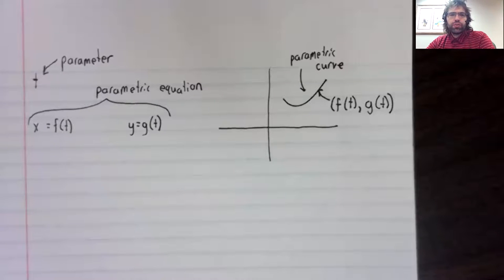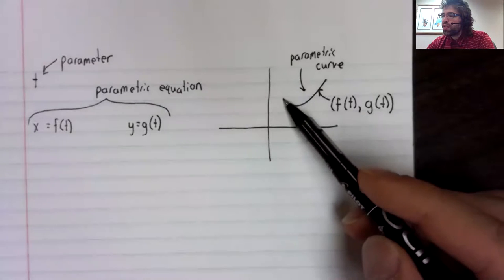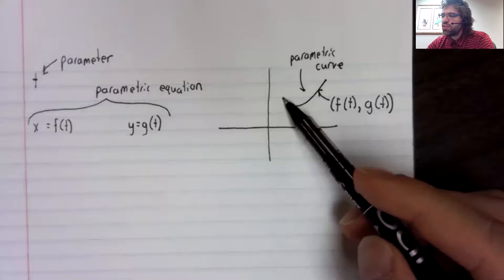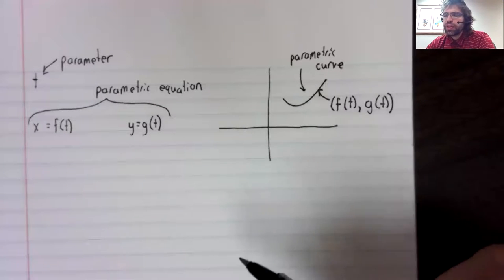A few more definitions. You'll notice that this parametric curve has a beginning point and an end point. For example,